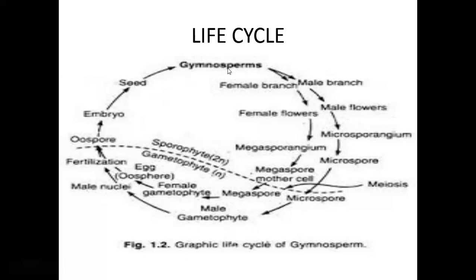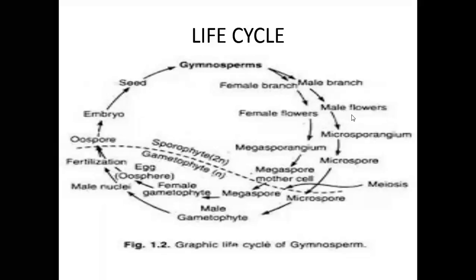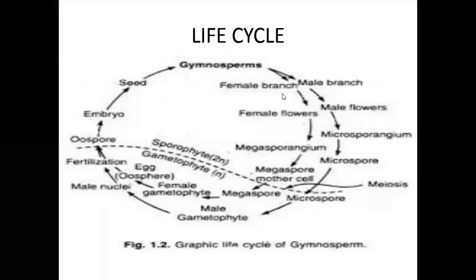The sporophyte of gymnosperms shows male branches and female branches. On the male branch, male flowers are developed called male cones. On the female branch, female flowers are developed called female cones.